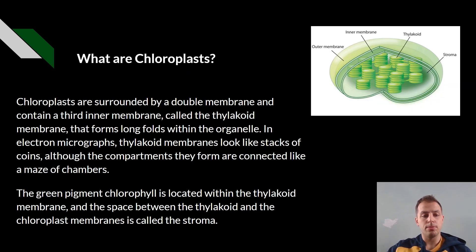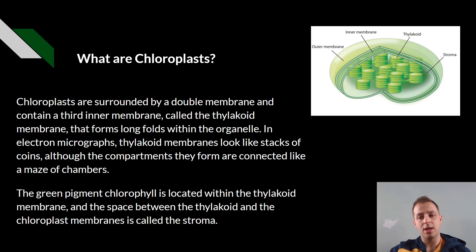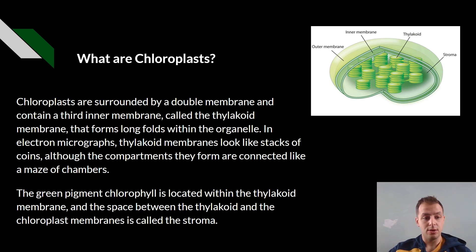What are chloroplasts? As you can see here, there is a picture of the chloroplasts. We have the outer membrane, the inner membrane, the thylakoids, and then the stomata. Chloroplasts are surrounded by a double membrane and contain a third inner membrane called the thylakoid membrane, which forms folds within the organelle.